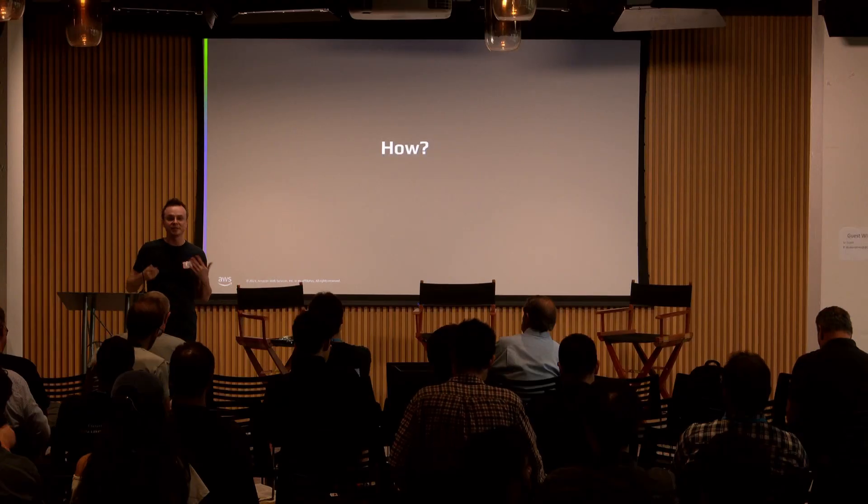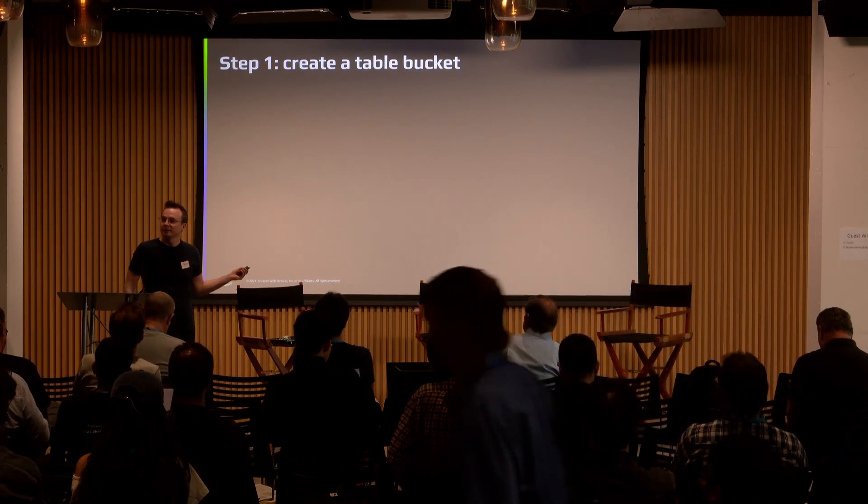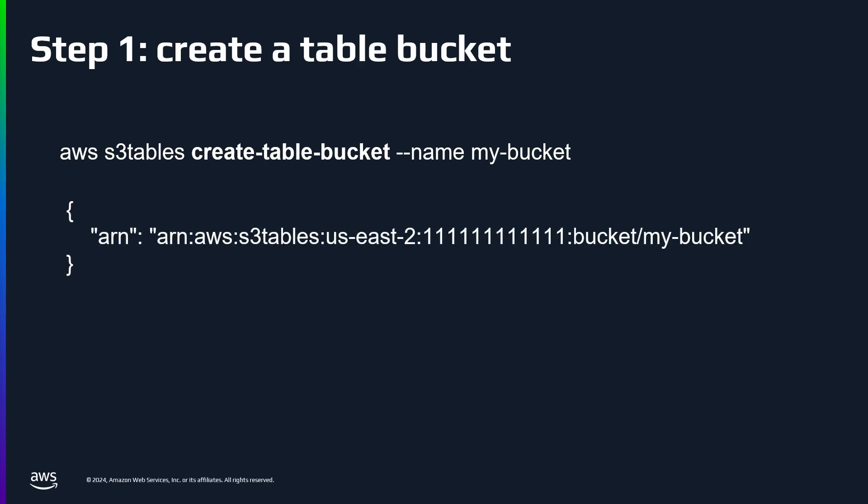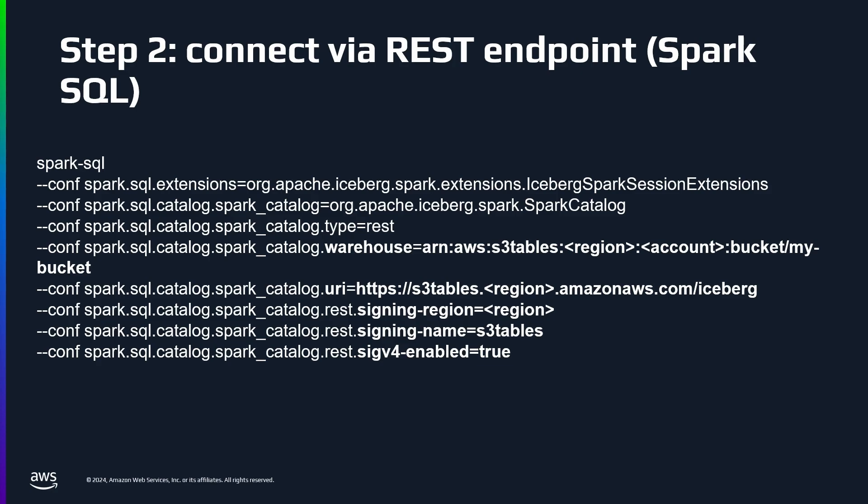Step one: you create a table bucket using the CLI. You type 'aws s3tables create-table-bucket name my-bucket' and you get back an ARN — super simple. We've really tried to make the experience as simple as regular S3, so with just this one command you get a full-fledged catalog created for you. Step two: connect to it via the REST endpoint. In Spark SQL, the key thing is the warehouse parameter — paste in that ARN. Set the URI to the S3 Tables endpoint for your region, and you're ready to go: create namespaces, create tables, write, query — it just works.